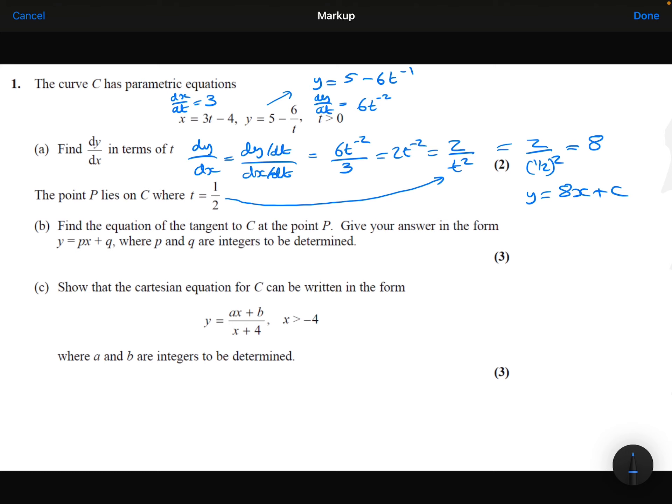Similarly, we just need to work out what the x and y coordinates are when t is a half. So if I substitute a half into the original x equation, then I find that the x coordinate at point P is minus 5 over 2.